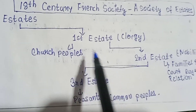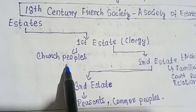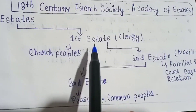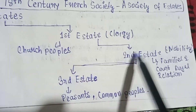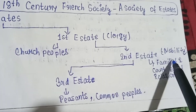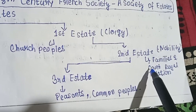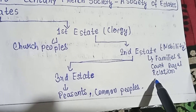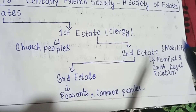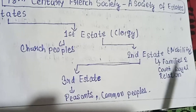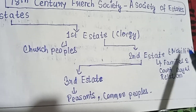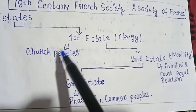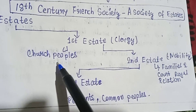The Second Estate consisted of families of the court and the royal relations of the king. The Second Estate people were also very wealthy and had a lot of property.